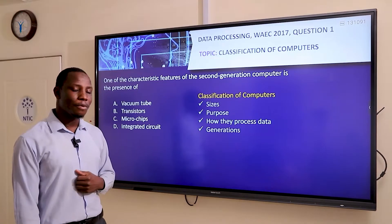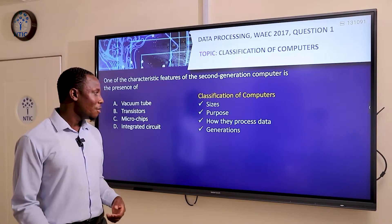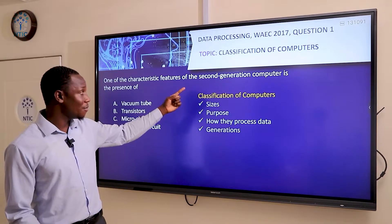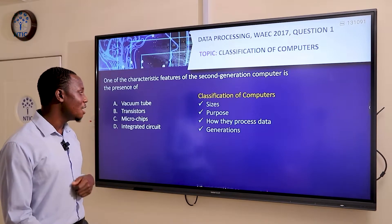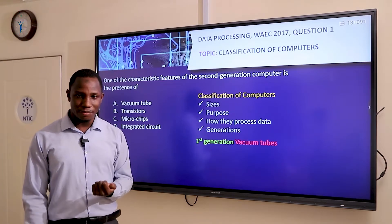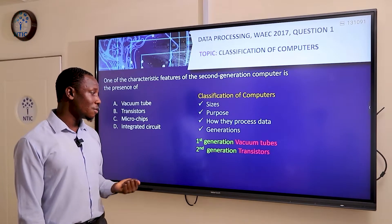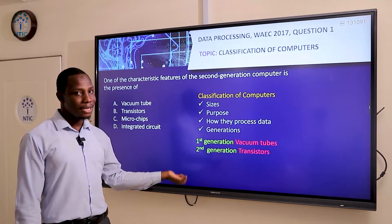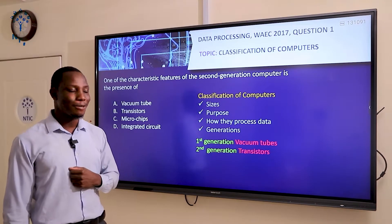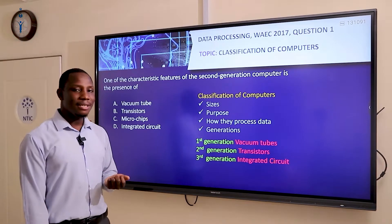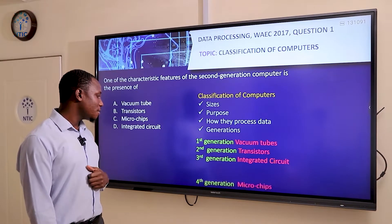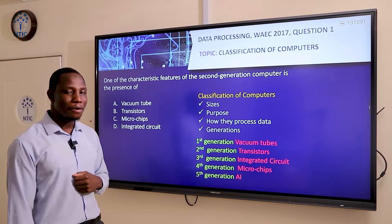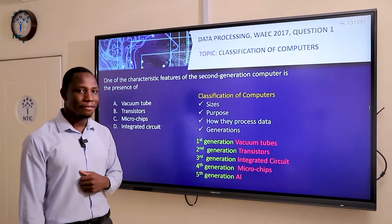We also have classification of computers based on generations. Under this we have five different generations. The first generation uses vacuum tubes, while the second generation uses transistors — the transistor replaced the vacuum tube. The third generation uses integrated circuits, the fourth generation uses microchips, and the fifth generation is AI, that's artificial intelligence.